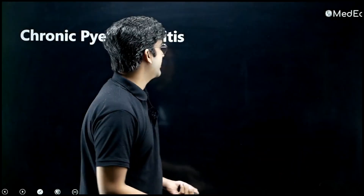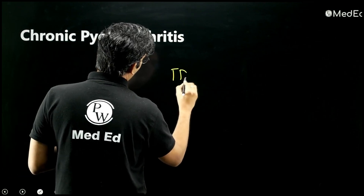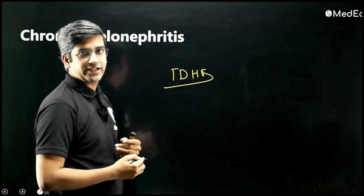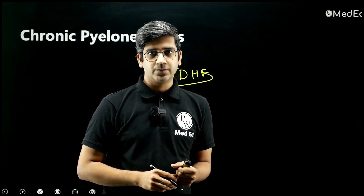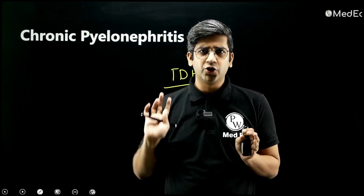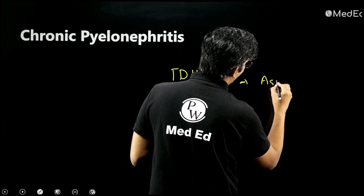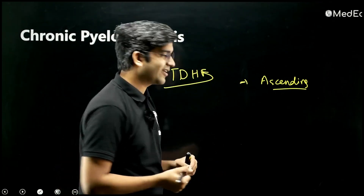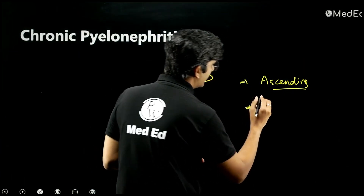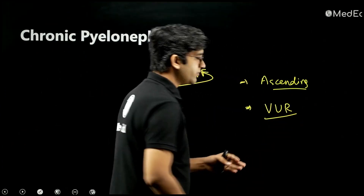Chronic pyelonephritis is always a problem because of TDHF — tissue destruction, healing by fibrosis — it can destroy the kidney. It results from recurrent attacks of acute pyelonephritis, almost always from ascending infection, since recurrent hematogenous sepsis is very unlikely. One of the biggest contributors is vesicoureteric reflux (VUR).